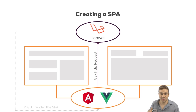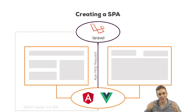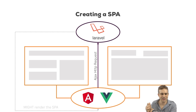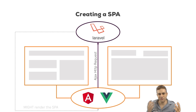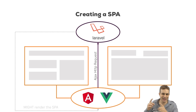In that case, you would use Laravel and Laravel would basically just expose some API endpoints, some URLs, to which your front-ends — your Angular 2 or Vue.js applications — can connect and can send the requests.